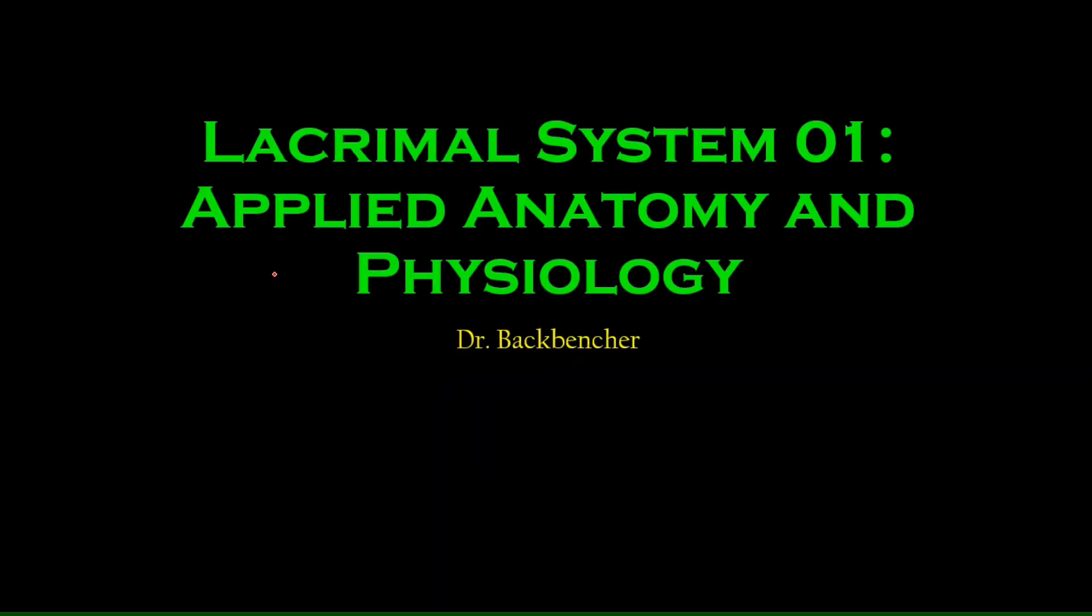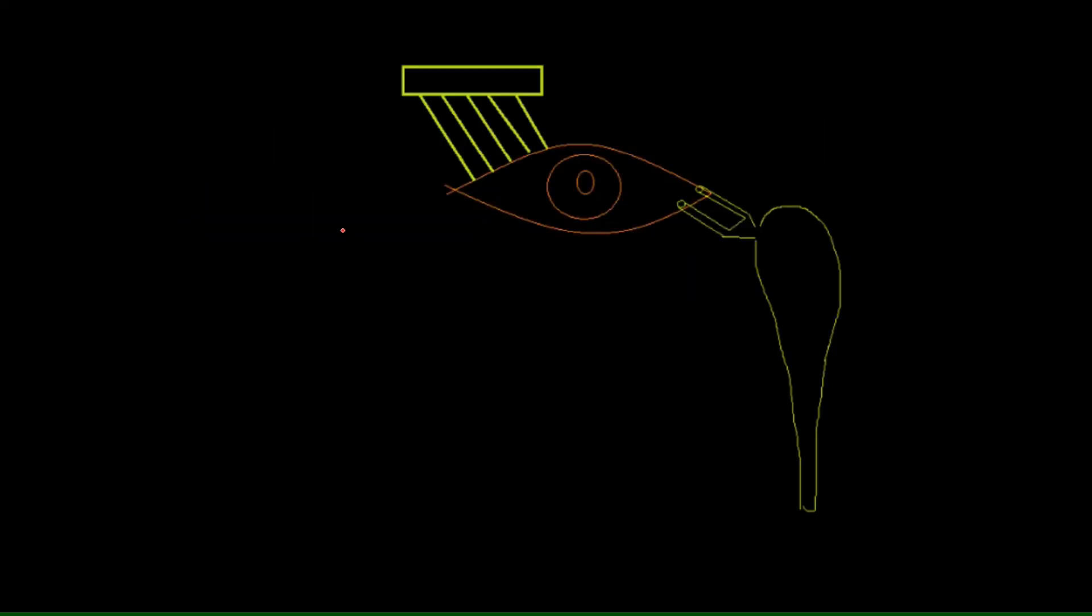Hey everyone, today we will be starting our new chapter on the lacrimal system. Before we get into any diseases, first we need to understand the anatomy and physiology relevant to the lacrimal system. Here's a diagram I made on Microsoft Paint. The lacrimal system has basically two components: the component which is secreting stuff and the component which is draining the secreted stuff outside.